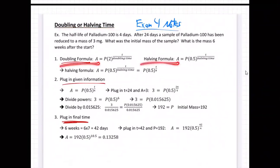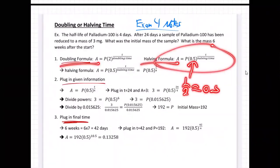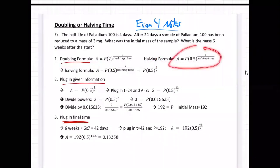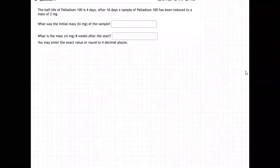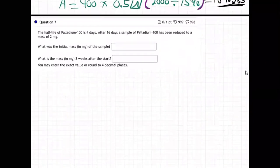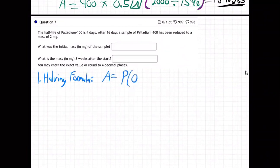I've written a doubling formula and a halving formula for you. Here's the halving formula - it has the half in it, the 0.5. A half is 0.5 as a decimal. A equals P times 0.5 to the T over halving time.